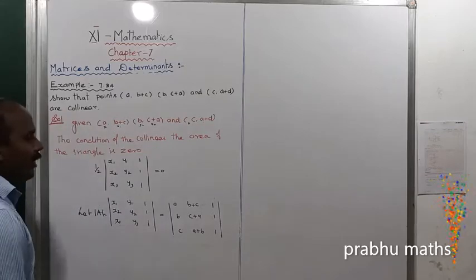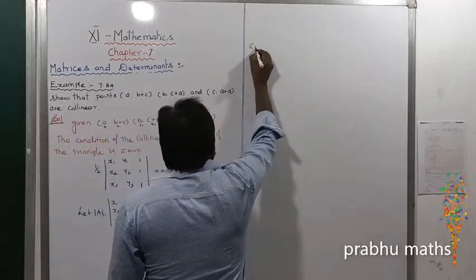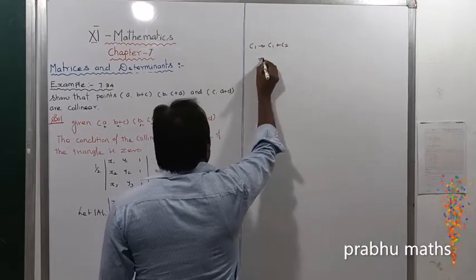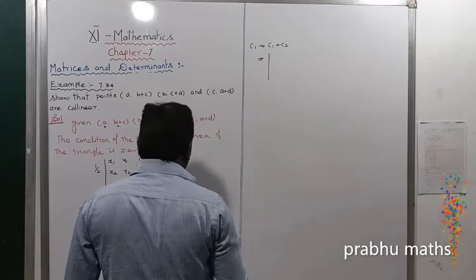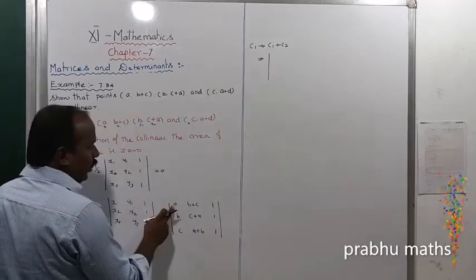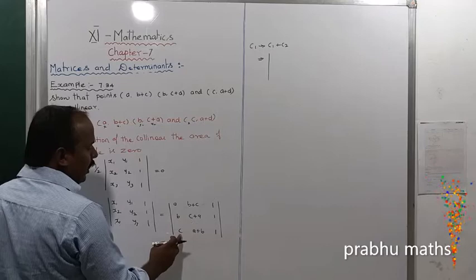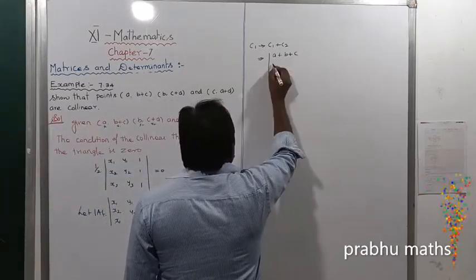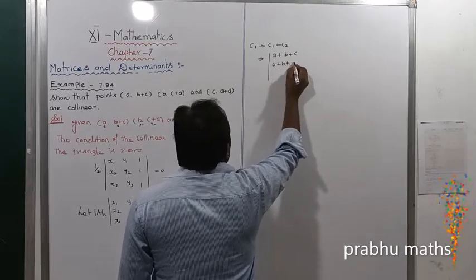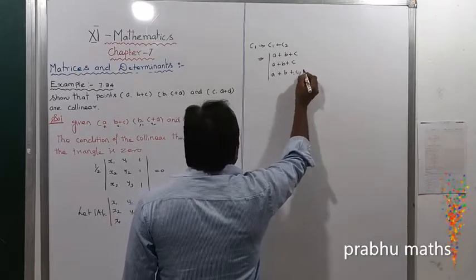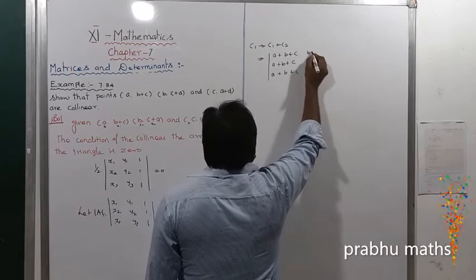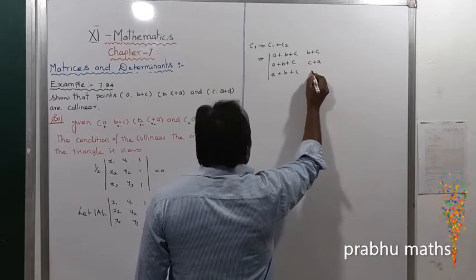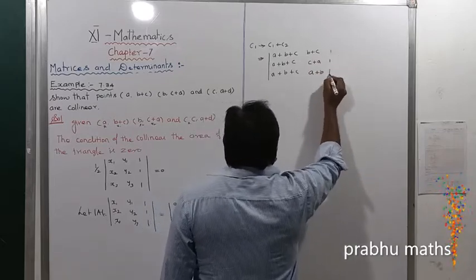By applying the column operation C1 → C1 + C2 + C3, which implies the determinant: C1 becomes A + B+C, then B + C+A, then C + A+B — each of which equals A+B+C. So the first column entries are all A+B+C. The remaining columns stay as B+C, C+A, A+B in the second column and 1, 1, 1 in the third column.